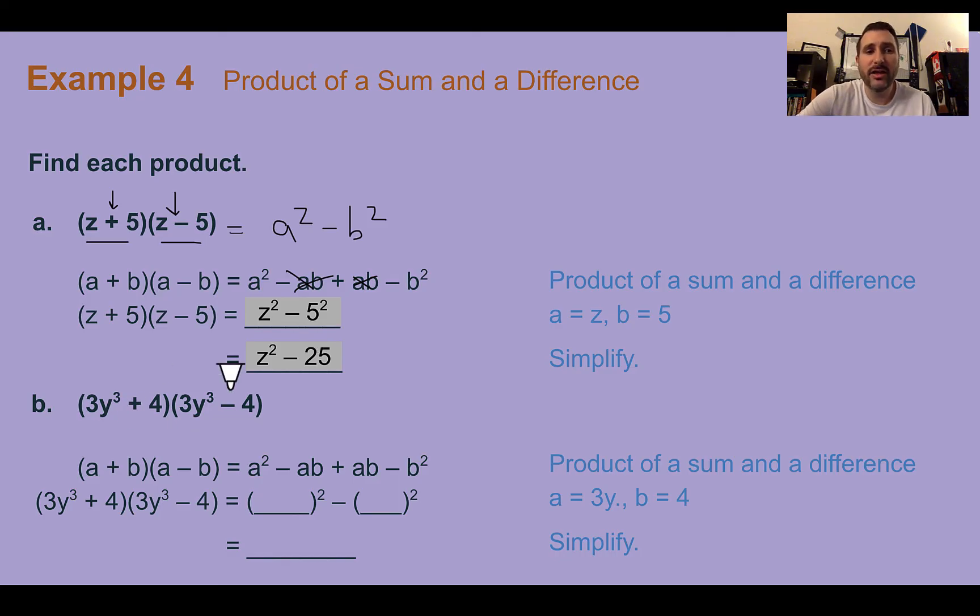Even if we have more complicated looking things, like here we have a y to the third power, these are still just the same thing but with opposite signs. So it's still going to follow that same pattern where the middle, where if we were to use the FOIL method, the inner and outer terms would cancel out. So we would have (3y³)² and 4². Then here I have the power to a product, so I'm going to distribute that out. 3 to the second power is 9. Then y to the third twice is y to the sixth. So 9y⁶, and then 4 times 4 is 16. The pattern says that it is subtraction in the middle. Make sure it is subtraction.